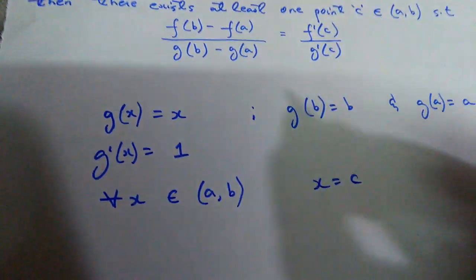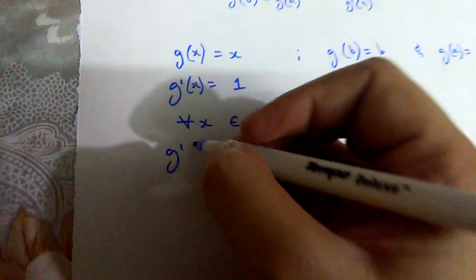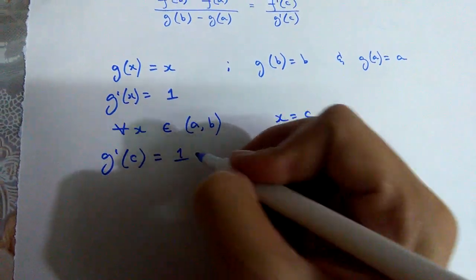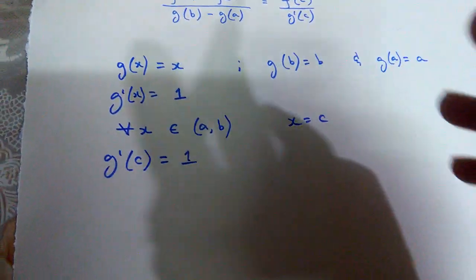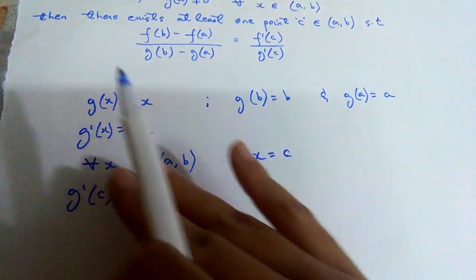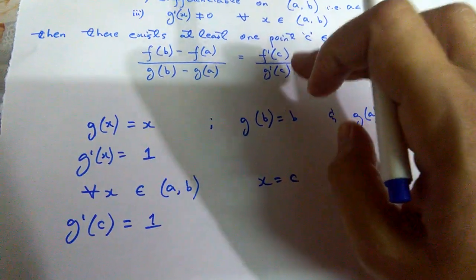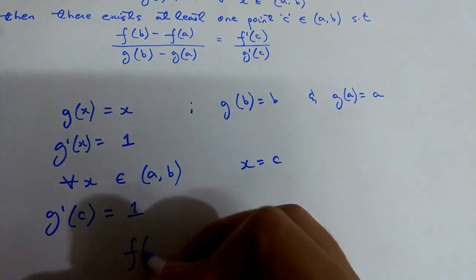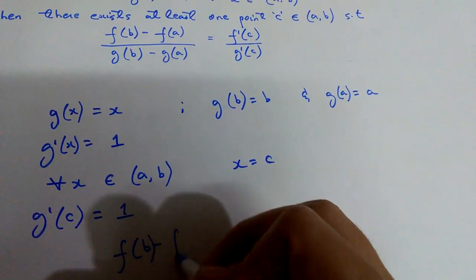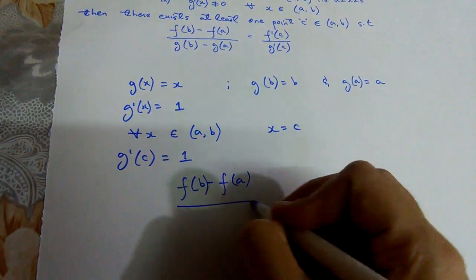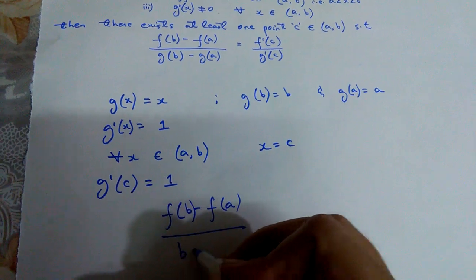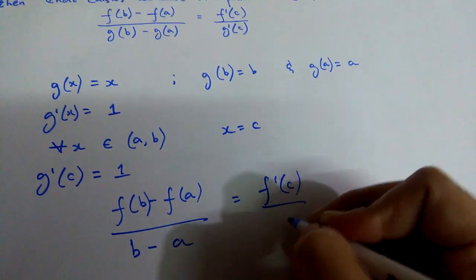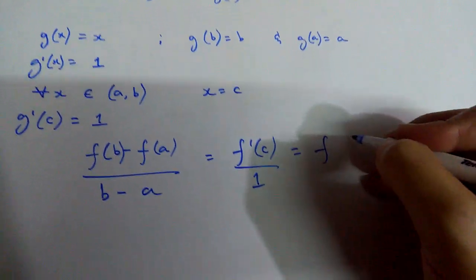So x could be c. This tells us that g'(c) is also going to be 1. If we substitute these values into the Cauchy's definition, it becomes: f(b) minus f(a) over g(b) minus g(a) — where g(b) is b and g(a) is a — equals f'(c) over 1, which is simply f'(c).